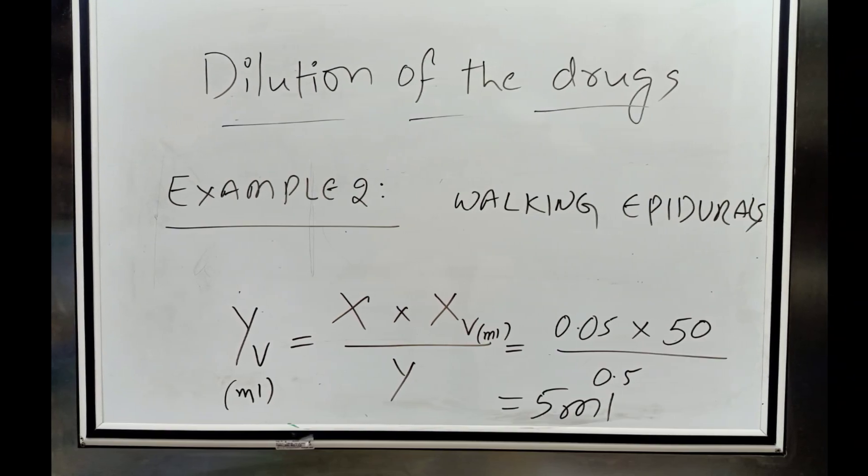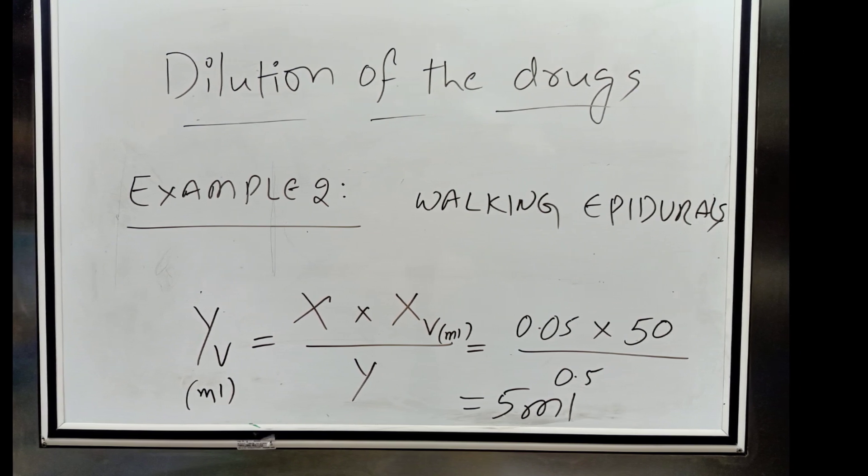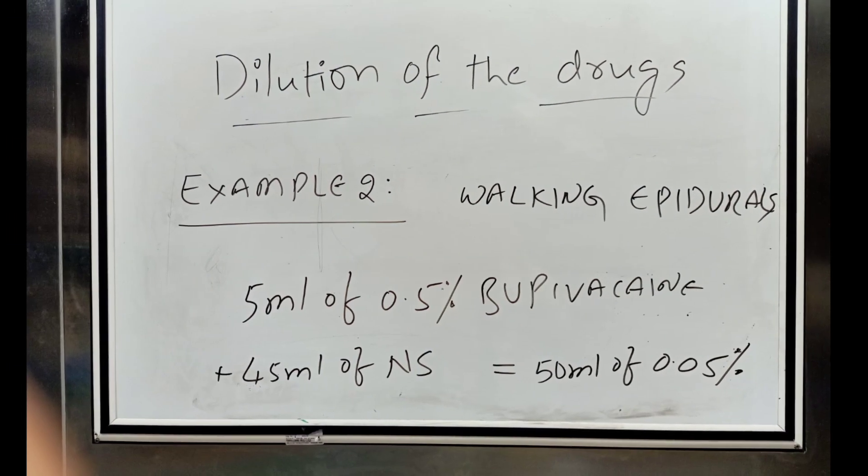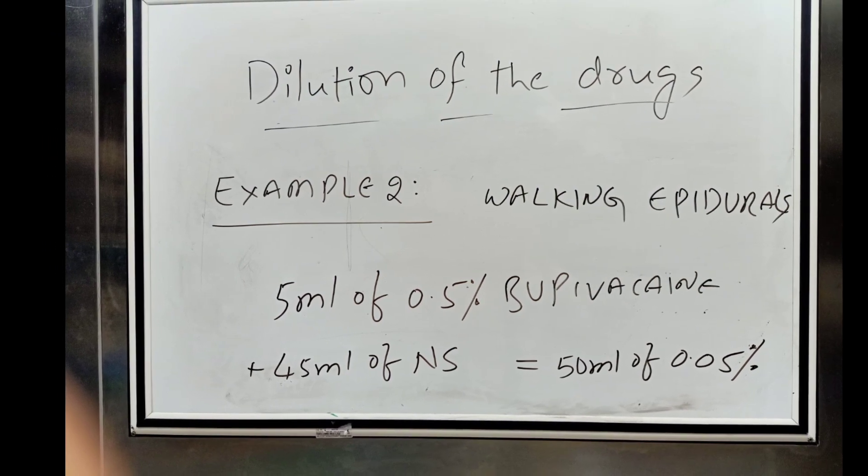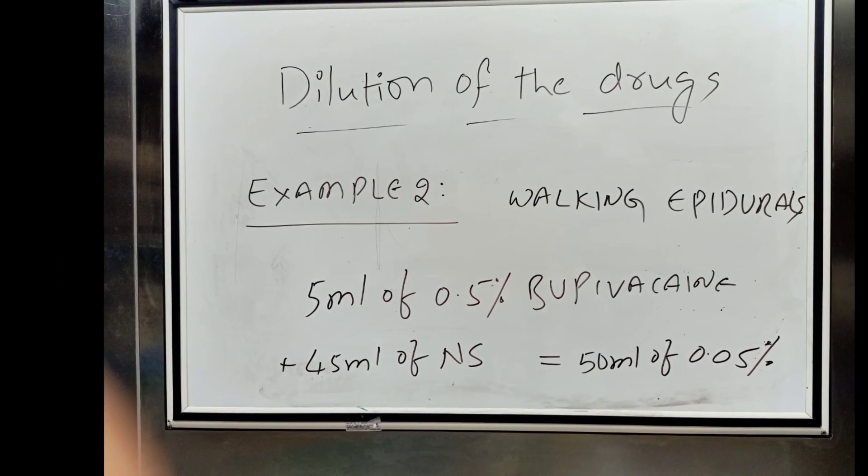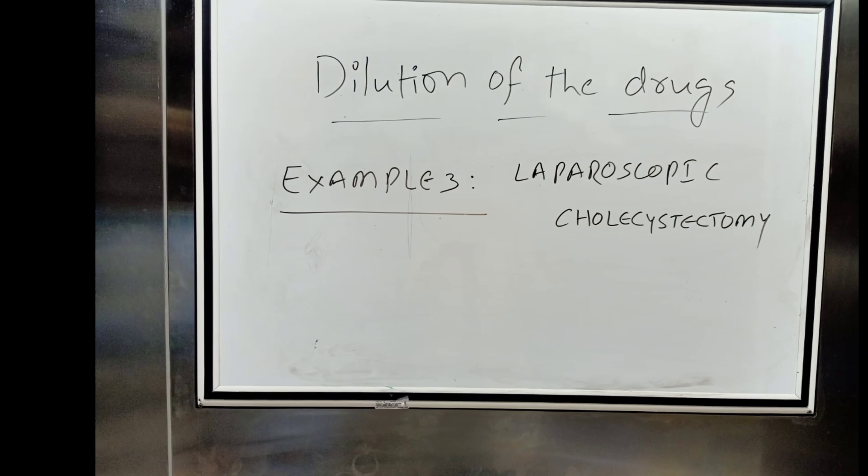This means 5 ml of 0.5% bupivacaine is diluted with 45 ml of normal saline solution to get a desired concentration of 0.05%.